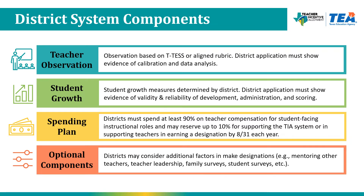District designation systems are based on three to four components. The first two components — teacher observation and student growth — provide the data by which the district will designate teachers. Teacher observation must be based on T-TESS or an aligned rubric, and the district will demonstrate evidence of calibration and data analysis throughout their observation practices. Student growth measures are determined by the district, and the district must show evidence of reliability in the development, administration, and scoring of their growth measures.